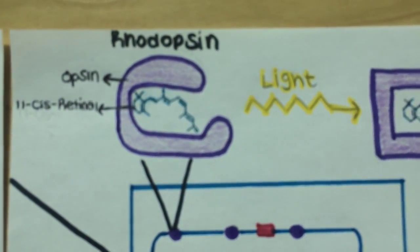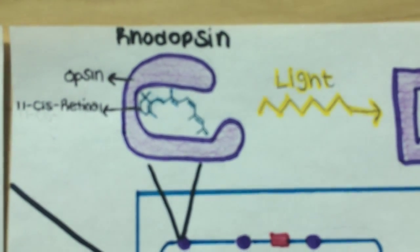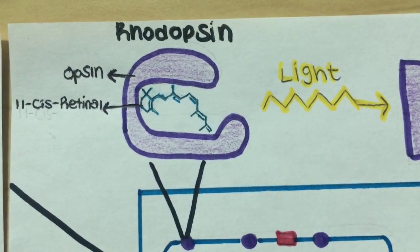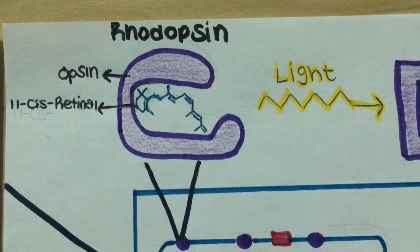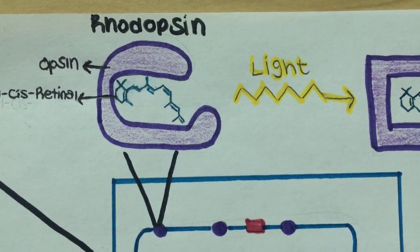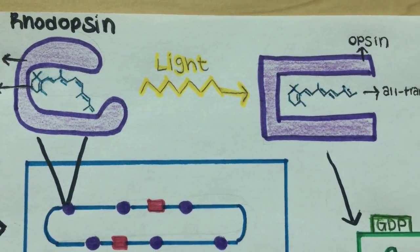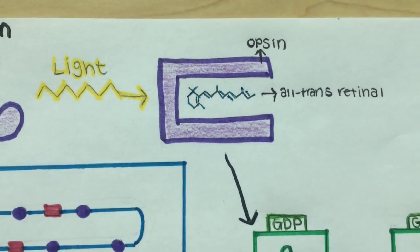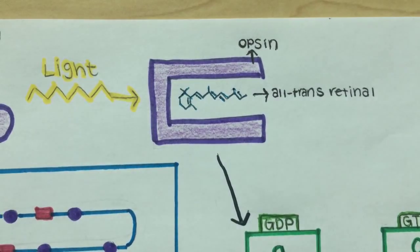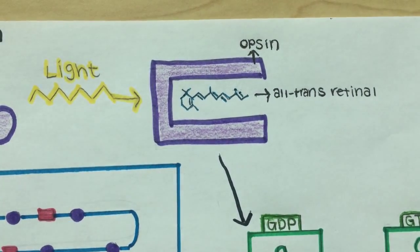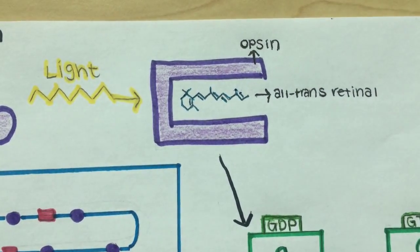Rhodopsin consists mainly of opsin and 11-cis retinal. Phototransduction occurs when light enters the eye and activates the opsin. This causes the 11-cis retinal to change to all-trans-retinal, which in return also causes the opsin to alter its shape.